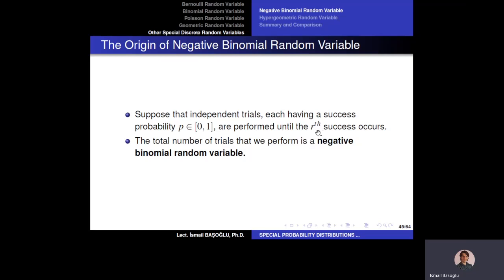So r can be any positive integer, and if r is equal to one, then this is going to be a geometric random variable. The total number of trials that we perform is called a negative binomial random variable — specifically, the number of trials we need to perform until we observe our r-th success.